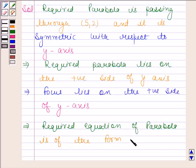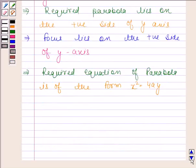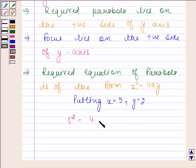Now putting x = 5 and y = 2 in this equation we get 5² = 4a(2). This gives us 25 = 8a. This implies a = 25/8.